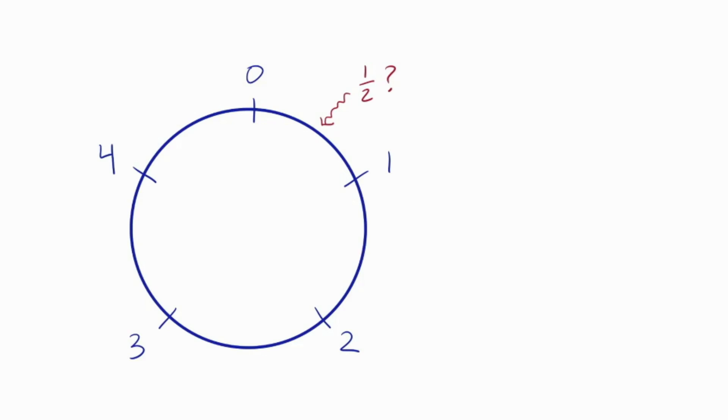What I mean is that mod five, there are only five things: zero, one, two, three, four. So if this question is going to have an answer, it should be one of those five things.